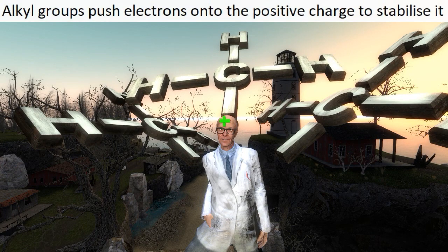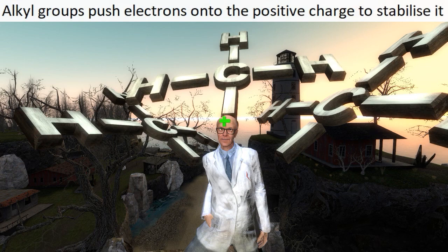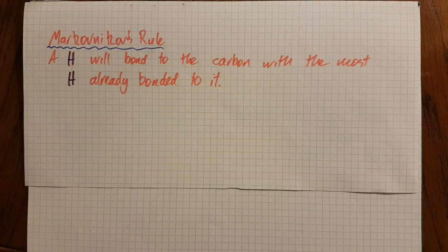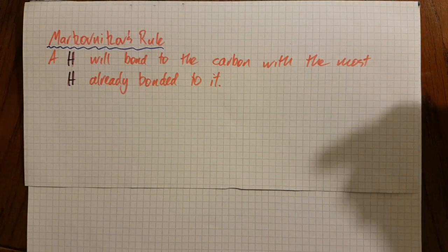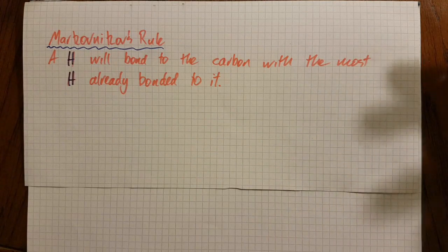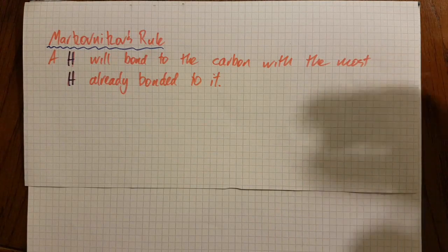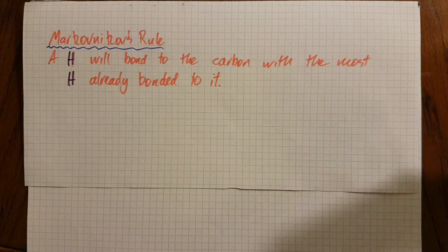So Markovnikov's rule states that a hydrogen will bond to the carbon with the most hydrogens already bonded to it. I think of it as the hydrogen wants to be with its brothers. Let's look at the classic example: propene reacting with hydrogen bromide.